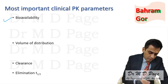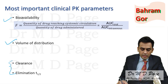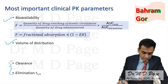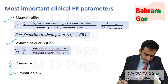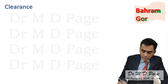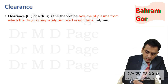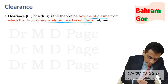The most important clinical PK parameters are bioavailability, volume of distribution, clearance, and t½. Bioavailability and Vd have been discussed; now we will cover clearance and t½. Clearance is defined as the theoretical volume of plasma from which the drug is completely removed per unit time.